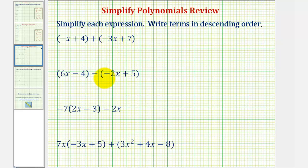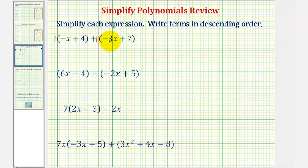When performing addition and subtraction of polynomials, it's helpful to think of clearing the parentheses and combining like terms. To clear these parentheses, we can think of distributing a positive one. Multiplying by positive one is not going to change anything, but distributing it would clear the parentheses.